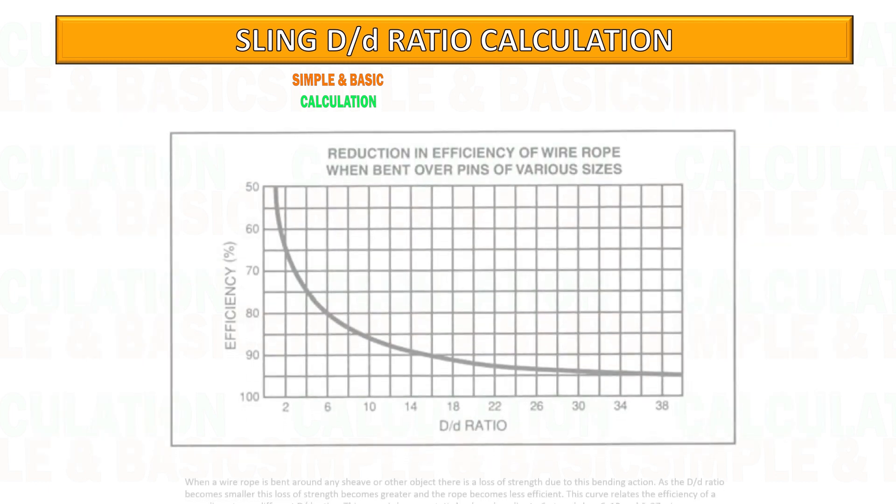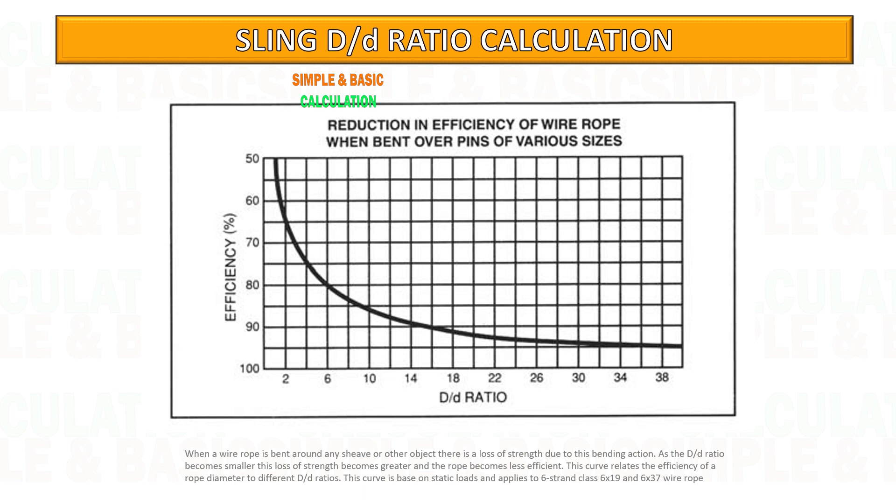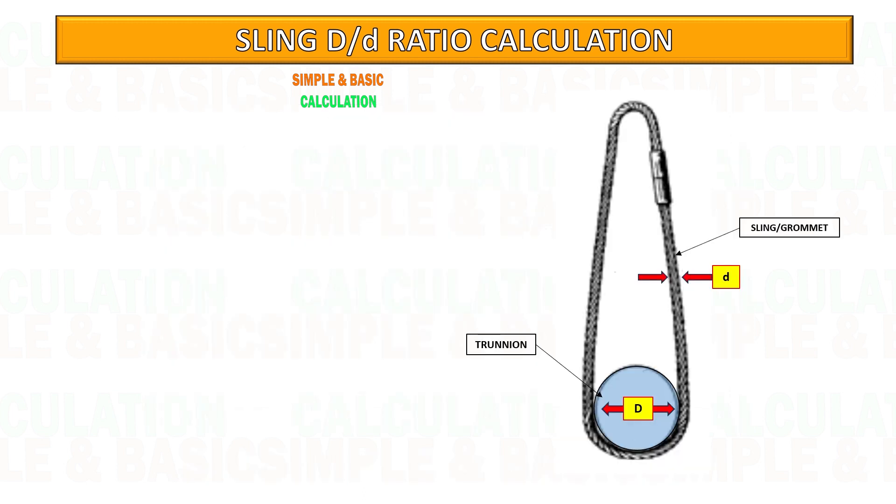This is the chart we will use to determine how much percentage reduction we need to consider based on D/d ratio. For example, based on the below given data, we will calculate the reduction of sling when it bends to the trunnion of the cargo.